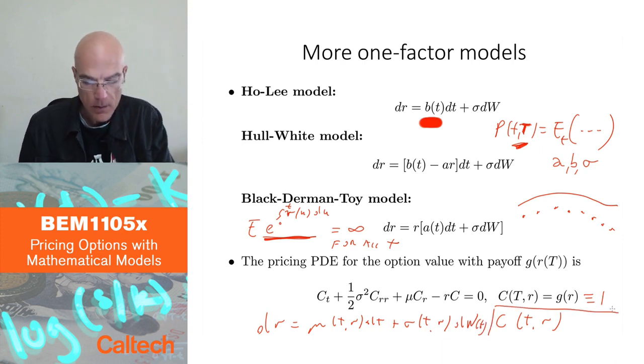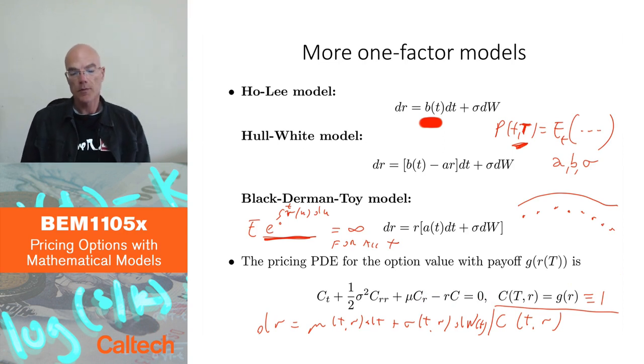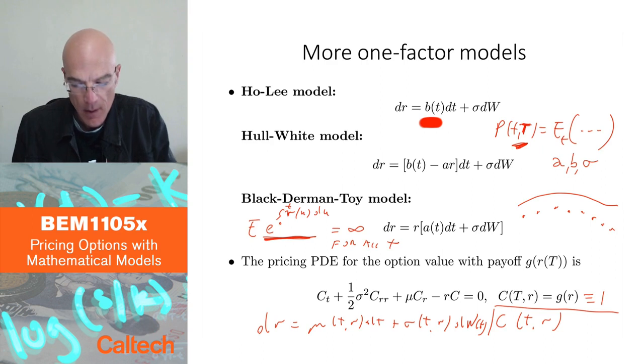Okay, so that's what I'm looking at here. So derivative with respect to time, C_t, one half this sigma squared, which sigma may depend on T and r. Second derivative with respect to r, C_rr plus drift mu(T,r) times first derivative, C_r, and then discounting minus rC equal to zero. Okay, that would be the differential equation.